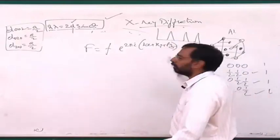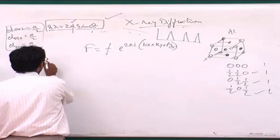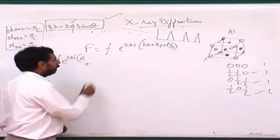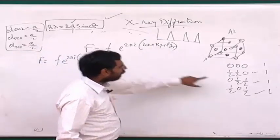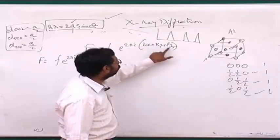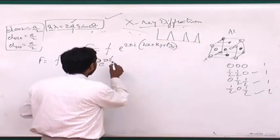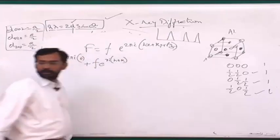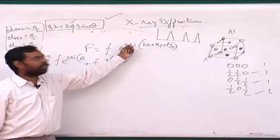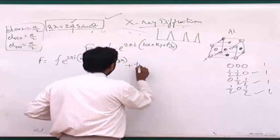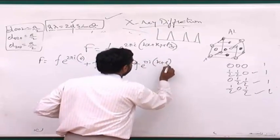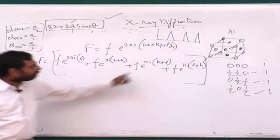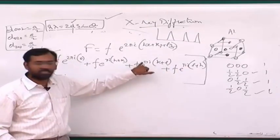The structure factor for FCC becomes: F = f·e^(2πi·0) + f·e^(πi(H+K)) + f·e^(πi(K+L)) + f·e^(πi(L+H)). The first term is simply f. For each of the remaining terms, the two indices in each pair either both reduce to even or odd sums. The condition depends on whether H, K, L are all even or all odd (unmixed), versus mixed (some even, some odd).